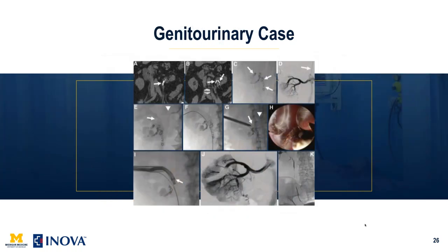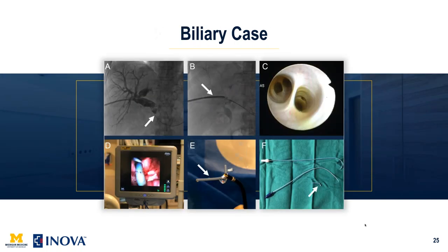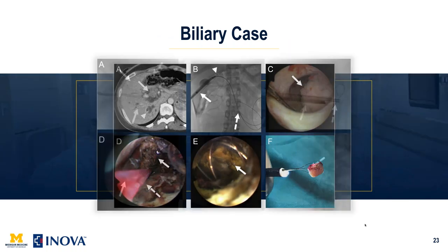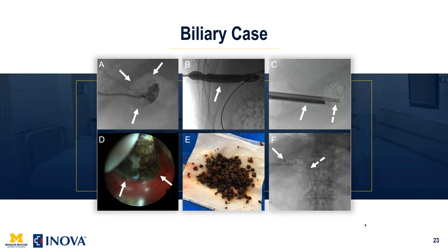Someone asked how long a typical gallstone removal case would last. It's variable — it depends on the number of stones. Cases can be fairly quick, say an hour or two, but Ravi and I had a patient with over a hundred stones that took most of the morning into the afternoon to remove. A standard case to remove one or two large stones can take about an hour or two, while removing every stone can take four to six hours.